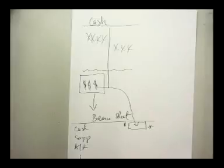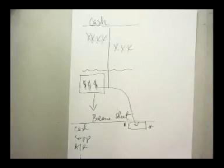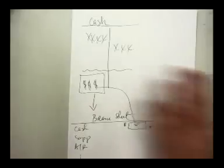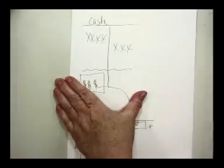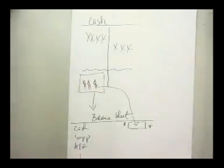Banks don't make errors nearly at the same level that we make them as humans, because they're going by electronic processes. Unless somebody inputs a wrong account number, you're just not going to see a lot of errors in your bank statement. So it's our job as the accountant to once a month open up that bank statement and compare it to this — what we've done. Does it match what the bank statement reflects?